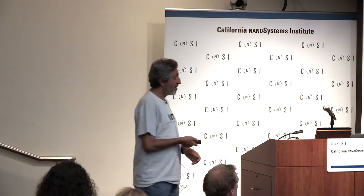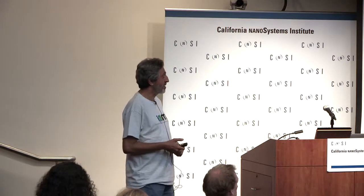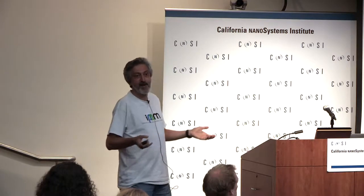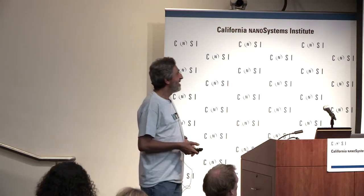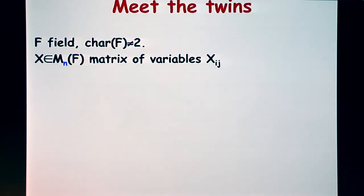Let me start. I welcome questions, please ask. We are going to work over some fields of characteristic different than two, because in characteristic two the permanent and the determinant are the same polynomial. These polynomials will be polynomials of an n by n matrix over the field.